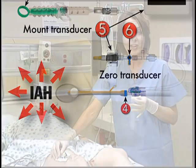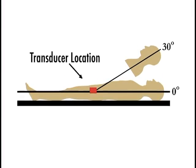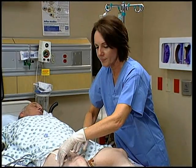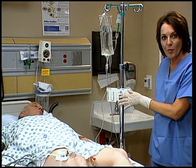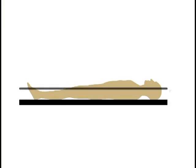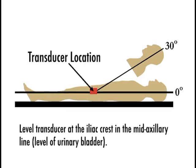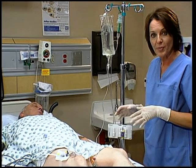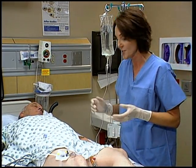Now mount the pressure transducer to the patient or the pole. For patient mounting, place a 4x4 on the thigh at the level of the iliac crest in the mid-axillary line and tape the transducer in place. If you choose to pole-mount the transducer, place it in your pole mount bracket and adjust the bracket to the level of the iliac crest in the mid-axillary line. Once mounted, plug it into your cable and monitor and zero it just as you would normally zero an arterial line transducer.